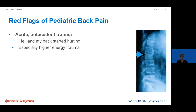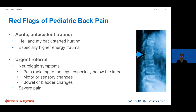Red flags include: history of acute antecedent trauma — a single event immediately followed by back pain, especially higher-energy mechanisms like falling from height or vehicular accidents — and neurologic symptoms in the setting of trauma such as pain radiating down the legs especially below the knee, changes to motor or sensory exam, changes in bowel or bladder habits, or severe pain. All of these should be worked up either in an ER or very quickly in an orthopedist's office.